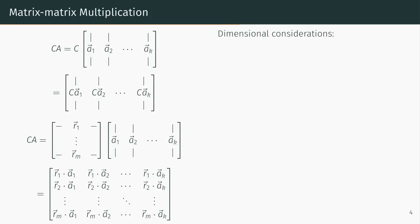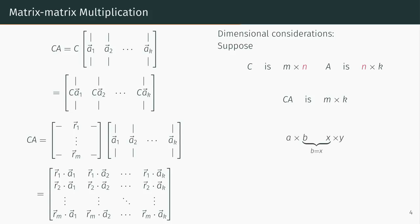There are some things to note about the dimensions of matrices involved in a matrix product. If C is an M×N matrix and A is an N×K matrix, the matrix product C times A will be an M×K matrix. Note also that in a matrix-matrix product, the number of columns of the first matrix must equal the number of rows of the second matrix. That is, in order for an A×B matrix to be compatible to be multiplied with an X×Y matrix, B must equal X.